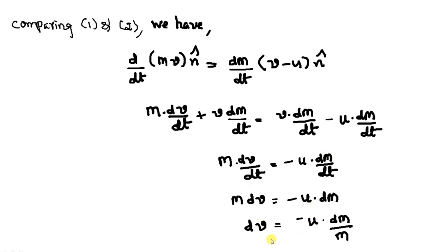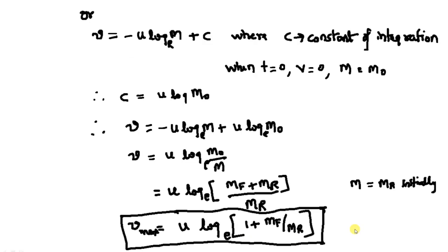Rearranging the terms, we get dV = −U·(dm/M). Integrating this equation, what we get is V = −U·ln(m) + C, where C is the constant of integration. We have to eliminate this constant of integration by applying boundary conditions. So the intermediate equation is V = −U·ln(m) + C.